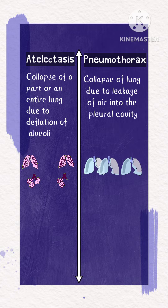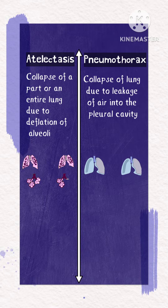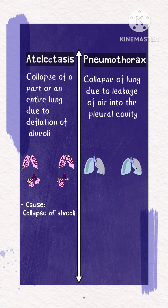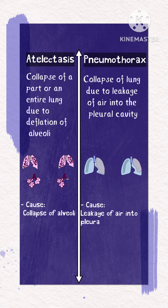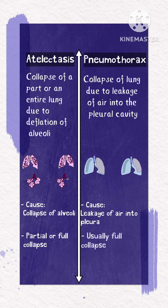First, the cause of the collapsed lung is different in both disorders: atelectasis occurs due to collapse of the alveoli, and pneumothorax occurs due to leakage of air into the pleura. Second, atelectasis may cause a partial lung collapse, but pneumothorax usually involves the entire lung.